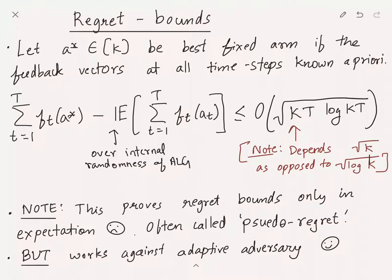In the case of EXP3, the regret bound holds only for the pseudo-regret, which is the total feedback obtained by EXP3 in expectation. On the plus side, this works against an adaptive adversary because Hedge works against an adaptive adversary and all operations we perform preserve that. The negative is that this is a weaker regret bound in the pseudo-regret sense.